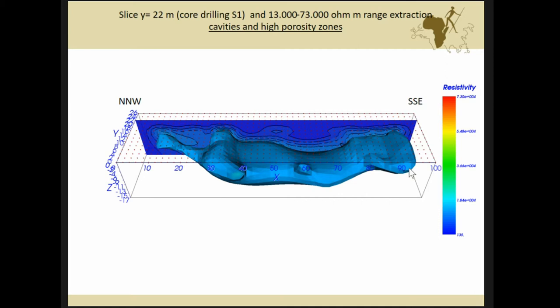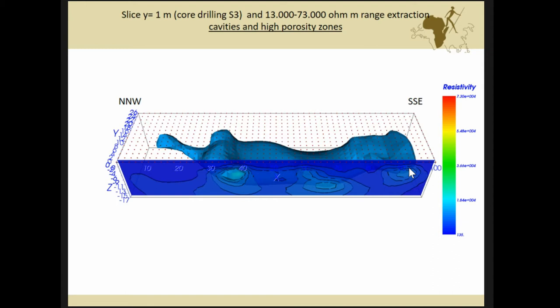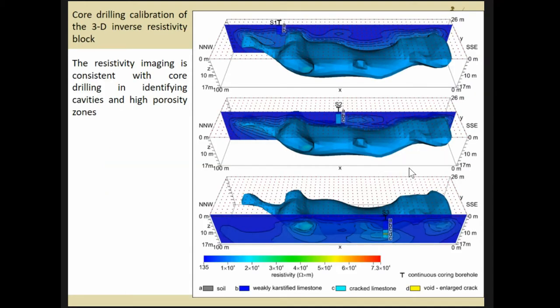So this is a slide, 22 meter Y coordinate, Y coordinate that includes core drill S1. We have a slice at 60 meters including core drilling S2. And this is another slice, one meter, including core drilling S3. We have so three core drills used for calibration. Unfortunately, two core drills are not deep enough to intercept any cavity. The cavity is typically located at eight meters of depth. Only core drill S3 is able to intercept the cavity.